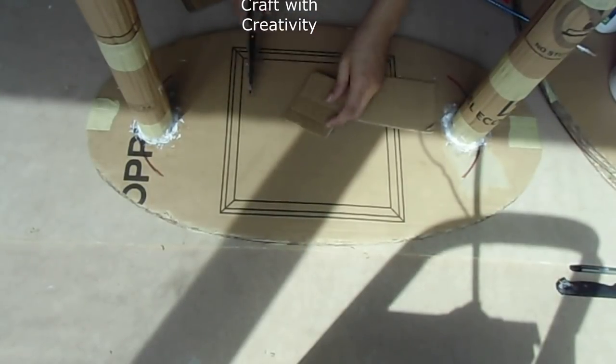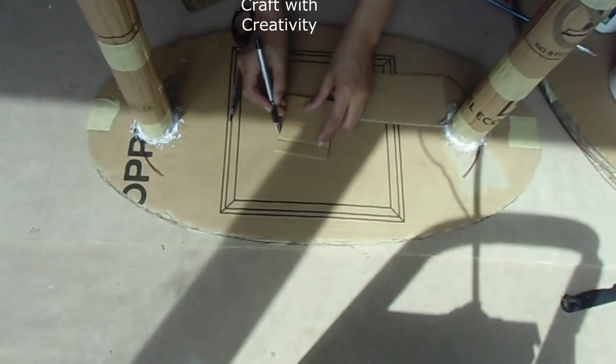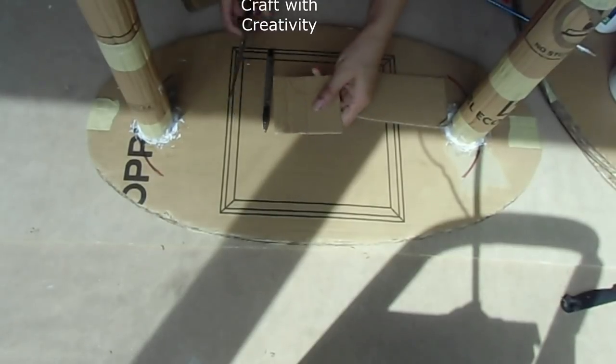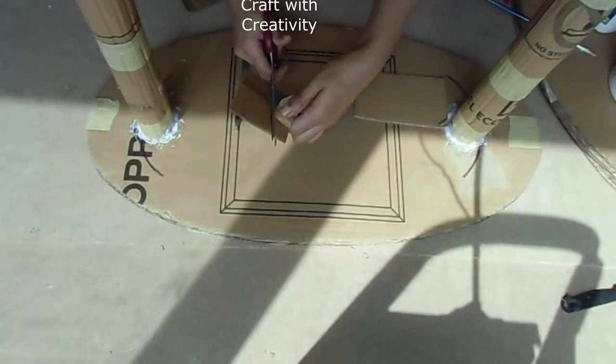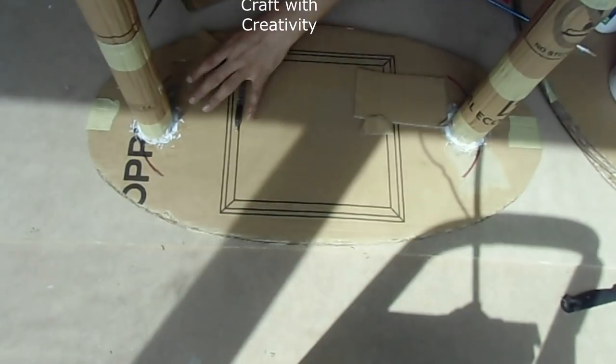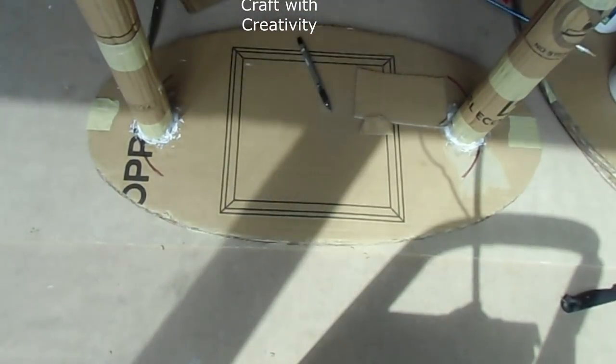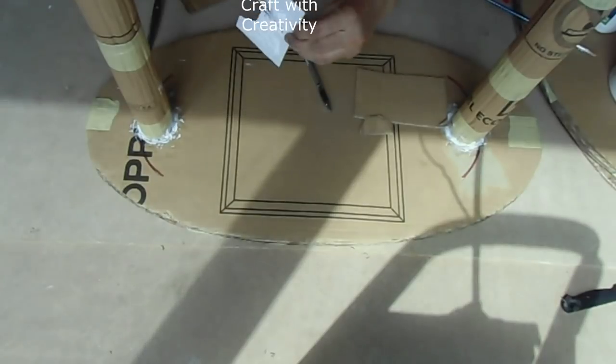For a more sturdy shelf, you can cut some pieces of cardboard like this with the shape of the leg and stick it on the shelf. It will be more sturdy and keep the legs in place with glue around the legs so it will hold the leg with the shelf properly.